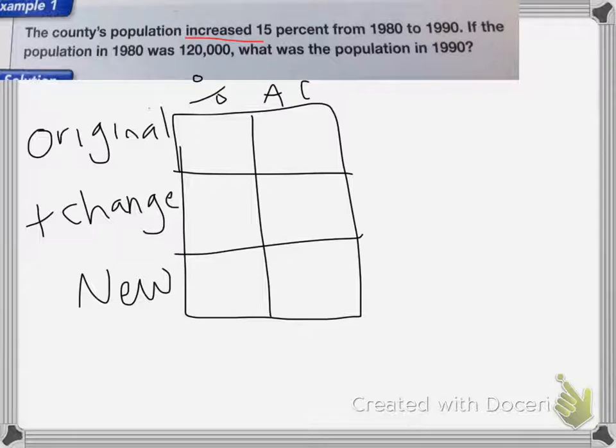The original in 1980 is going to be 100% because it's the entire population. Our change, we know that it's increasing 15%, so I'm going to have plus 15%. So then my new amount is going to be 115%.